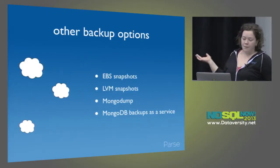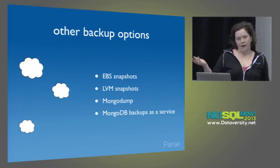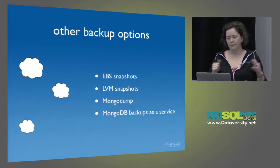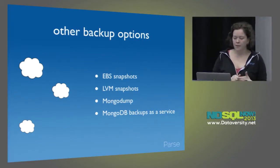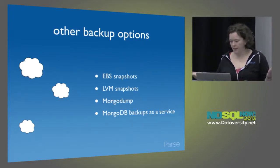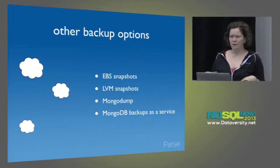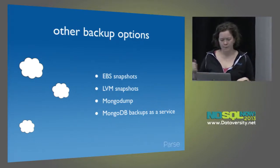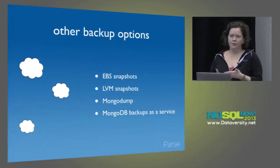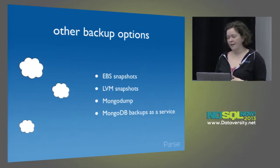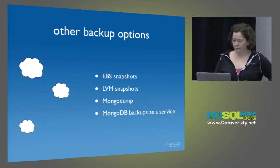You can use EBS snapshots if you're using an EBS-backed volume — really no reason to use anything else in my opinion. If you're using ephemeral storage, you can set up LVM and use LVM snapshots. Or some people use MongoDump to disk and then upload to S3. There's also a new service from Tengen that's MongoDB backups as a service that looks cool — I haven't used it yet, but I've heard good things. It is still in beta.